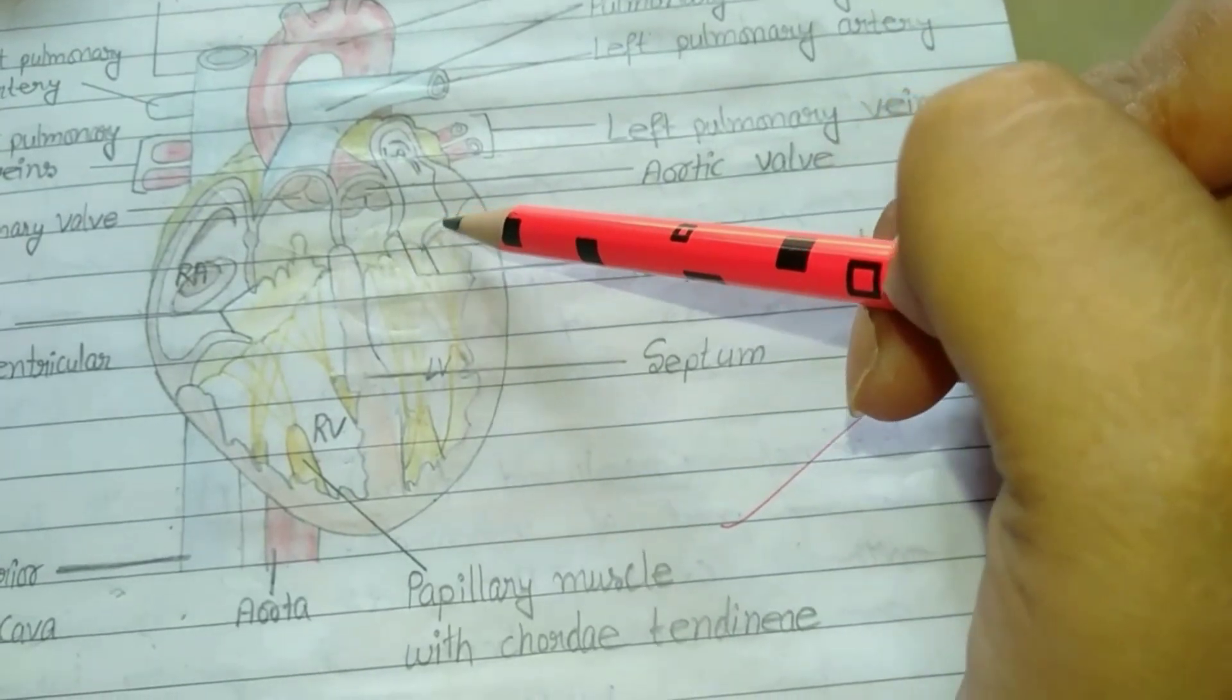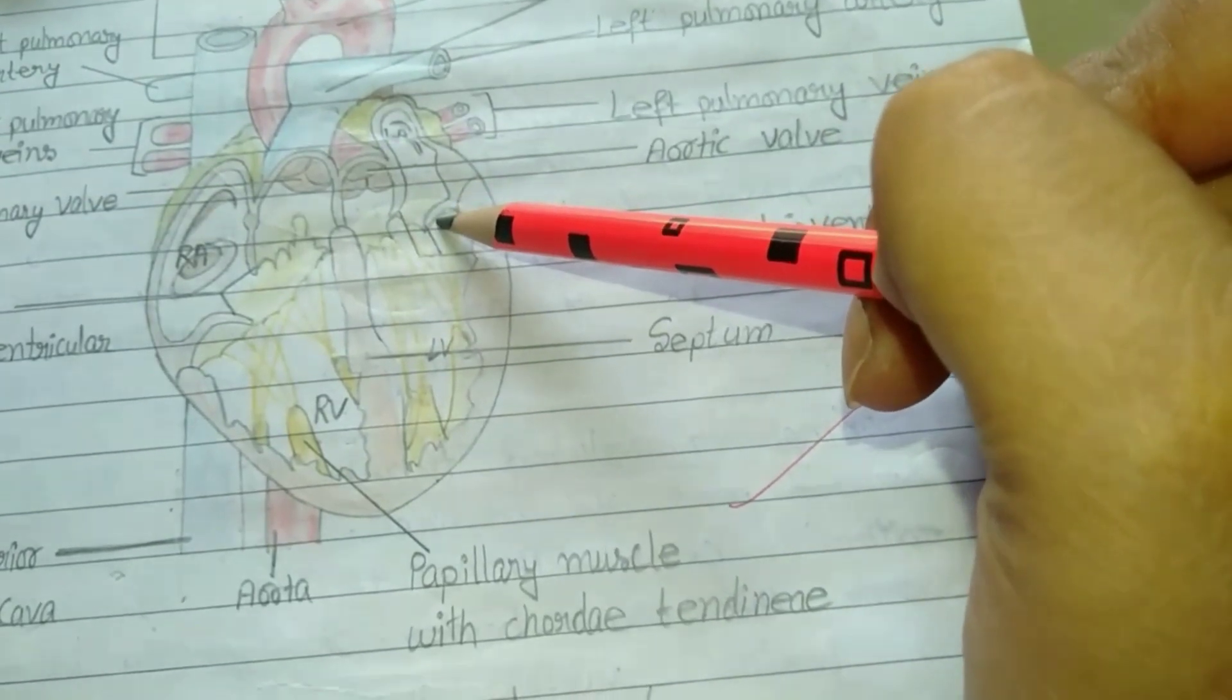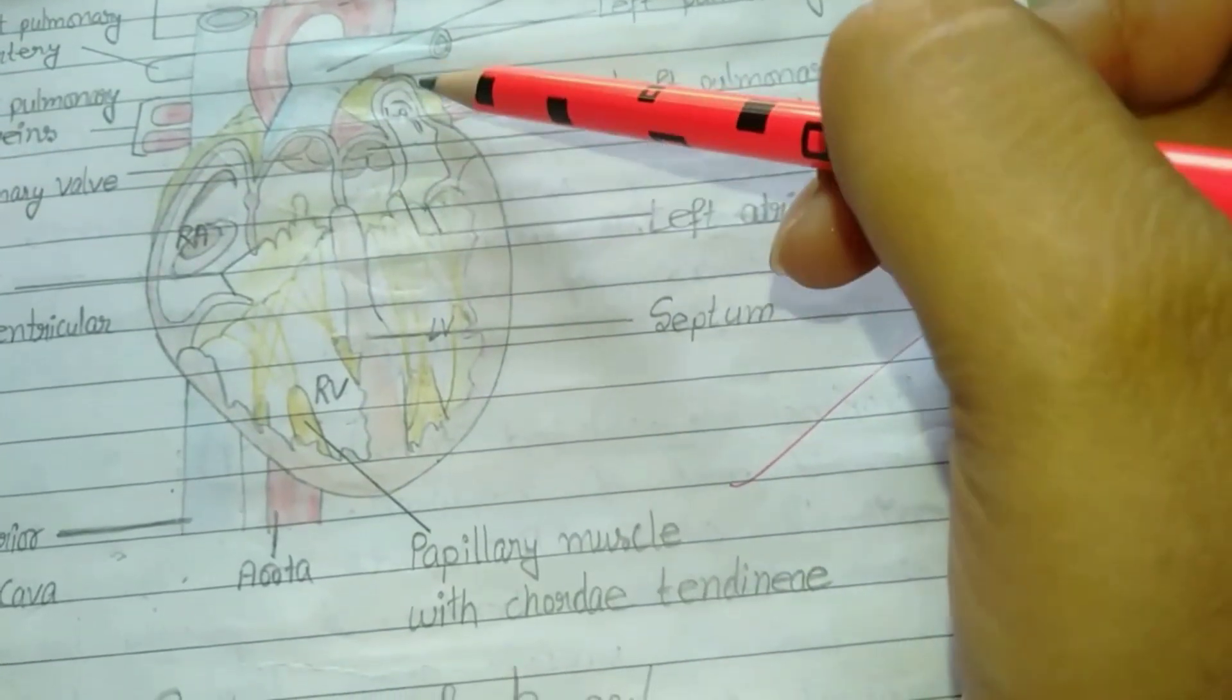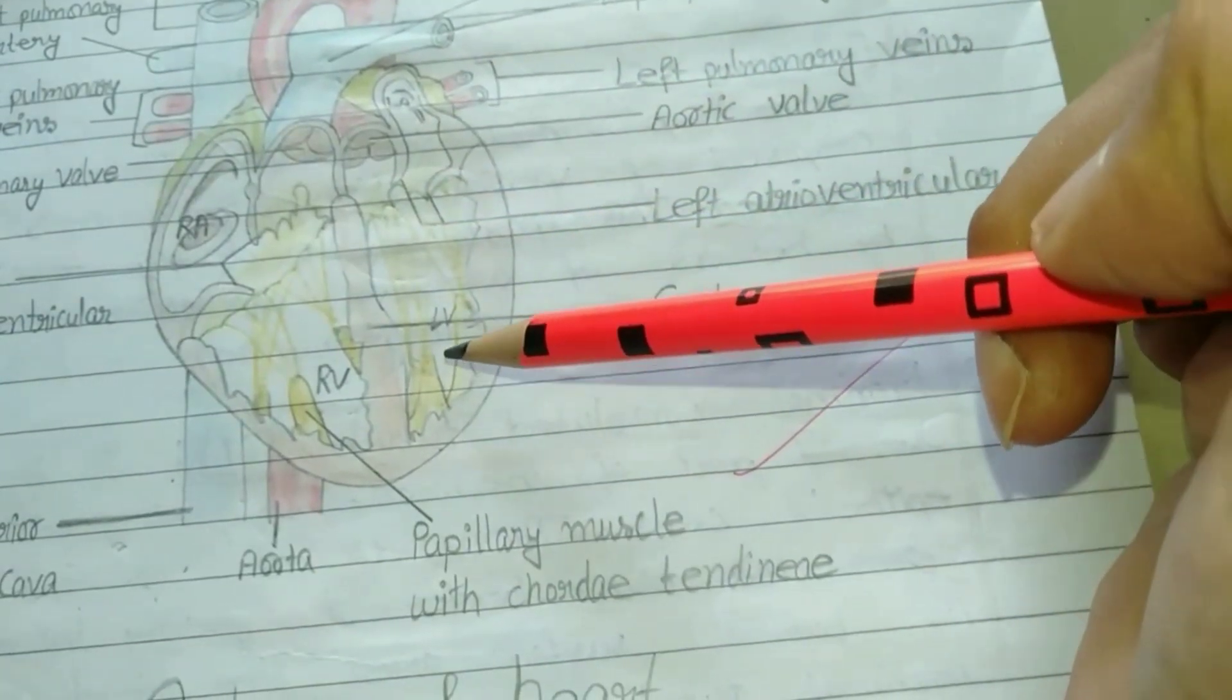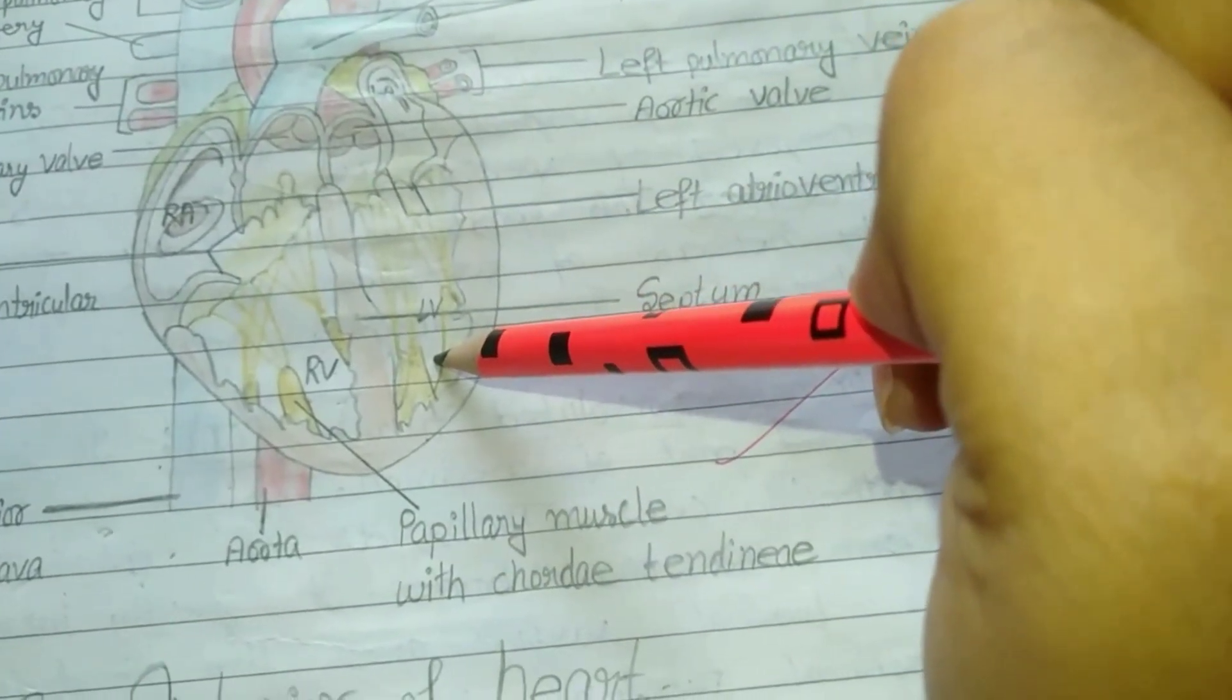When the left atrioventricular valves get opened, the oxygenated blood flows into the left ventricle.